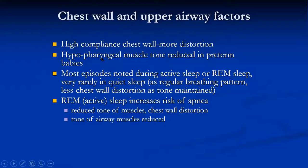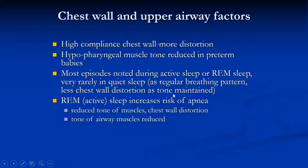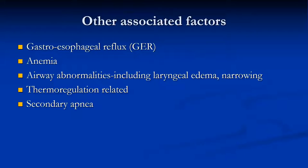The high-compliance chest wall is more easily distorted — the more premature the baby, the less developed the chest wall muscles and the greater the distortion. Hypopharyngeal muscle tone is also reduced in preterm babies. In quiet sleep there is a regular breathing pattern with less chest wall distortion as tone is maintained. However, in REM sleep there is reduced muscle tone, chest wall distortion, and reduced airway muscle tone, so we get more apnea during REM sleep.